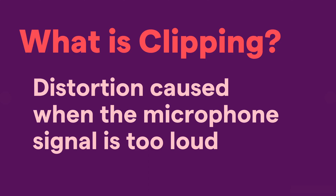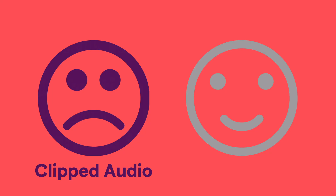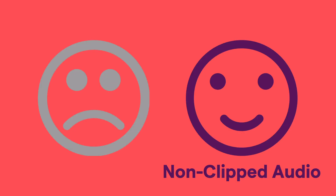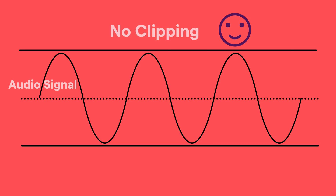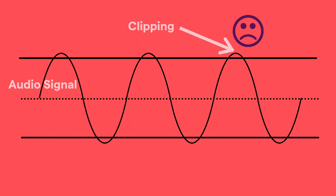Clipping is distortion caused when the microphone signal is too loud. A clipped signal sounds something like this. This audio is clipping. And non-clipping or good audio sounds like this. This audio is not. We can approach this from a visual perspective — an audio signal can only be so loud, and once it reaches a certain threshold or gets too loud, everything above that volume level gets cut off or clipped. And generally that's bad, because it creates a bad sound.